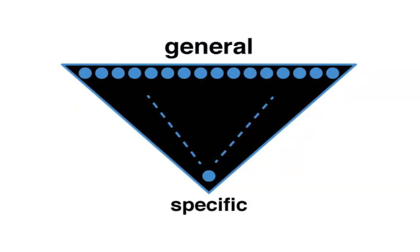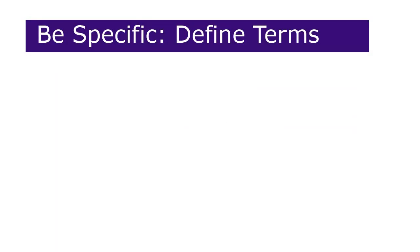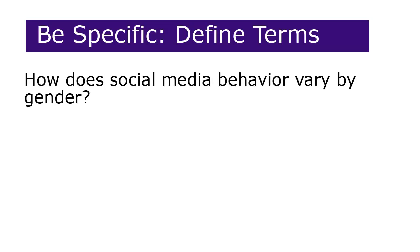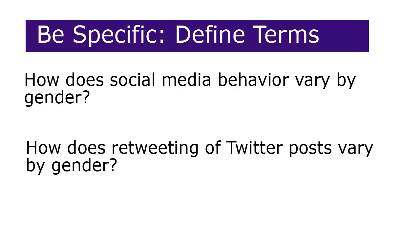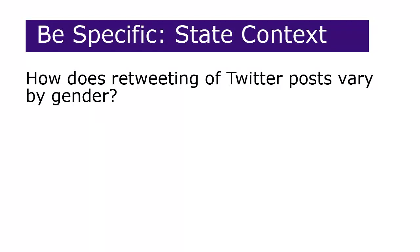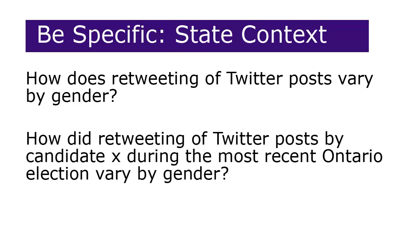Focusing involves being very specific about all the details involved in your question. You need to be sure all the vague and general terms you used are made more specific. This involves specifying clearly what all your terms mean, or operationally defining them. For example, to focus a question about social media behavior we would look at the terms we've used and try to be more specific about each. Social media could mean a variety of things, but let's define it as Twitter. Behavior is also quite a general term, but let's define it as retweeting of Twitter posts. That would give us a question on how retweeting in Twitter varies by gender, which is a little clearer and more focused. Focusing also involves specifying what context you're studying. In our Twitter example, it would be really hard to study all of the retweets ever done. Instead, let's look at retweets of posts made by a specific candidate during the most recent Ontario election. That gives a much more specific focus to the project and makes it more workable.